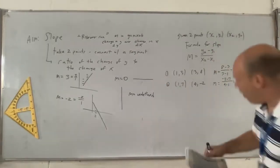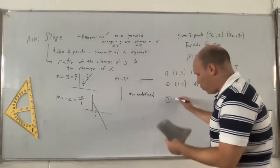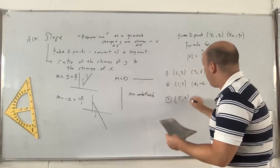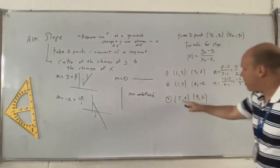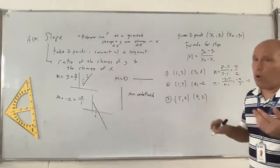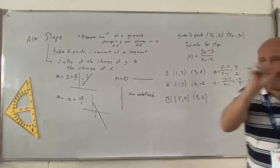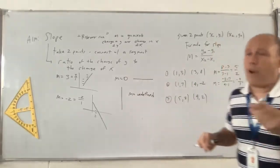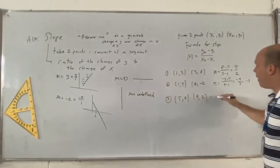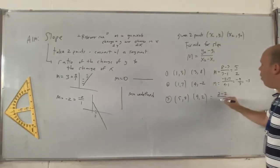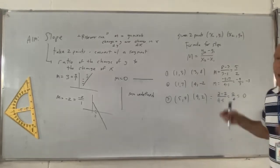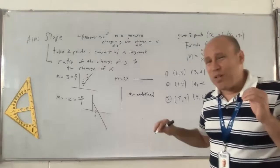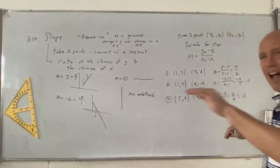Let's try another example to get a visual: (5, 2) and (9, 2). We can see x is changing but y is not changing at all — it's constant. Let's verify: the slope is 2 minus 2 over 9 minus 5, which is 0 over 4, which is 0. And that zero tells us the line is constant.